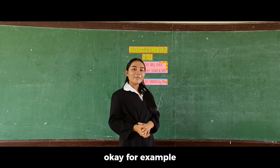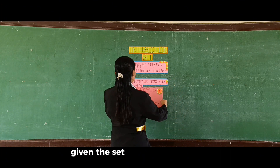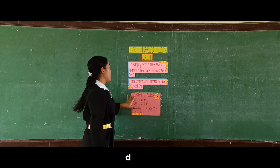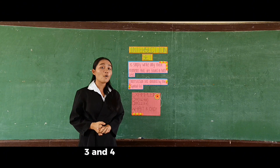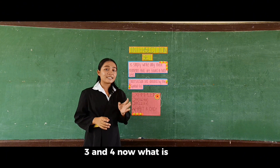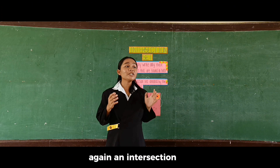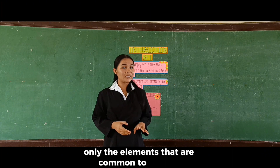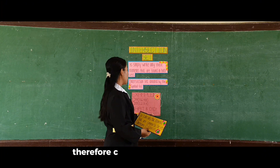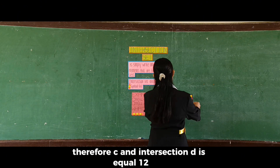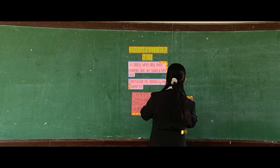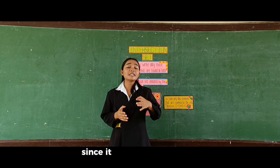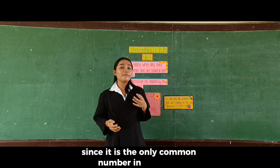For example, given set C = {3, 6, 9, 12} and set D = {1, 2, 3, 4}, what is C intersection D? An intersection set takes only the elements that are common to the sets. Therefore, C intersection D = {3}, since 3 is the only common number in both sets.